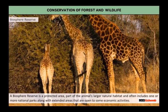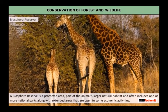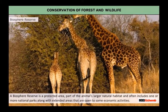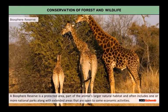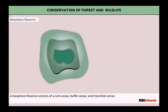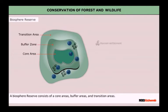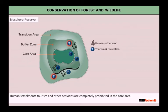A biosphere reserve consists of a core area, buffer area, and transition area, along with extended areas that are open to some economic uses. Human settlement, tourism, and other activities are typically prohibited in the core area.